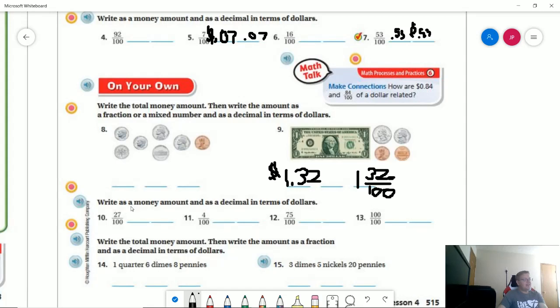Number 10 as a money amount, that would come out to 0.27 dollars. And then the other one would again be 0.27.